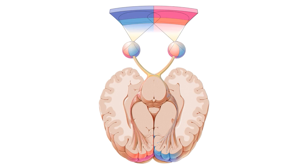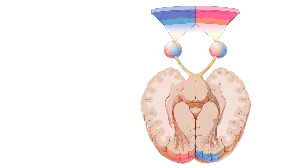The visual pathway transmits information interpreted from visual light from the eyes to the visual cortex in the brain. At the end of this tutorial we'll go over some clinical notes relevant to the optic nerve and the visual pathway. But before we have a look at those structures, let me first give you a bit of an overview of the main visual pathway.